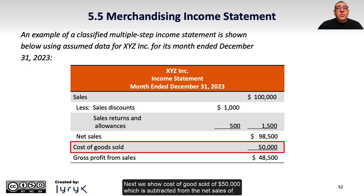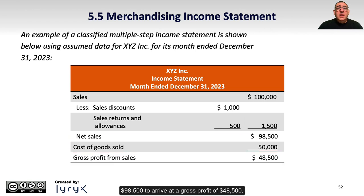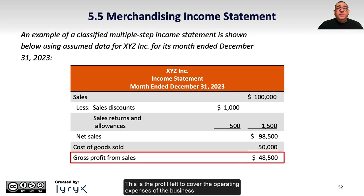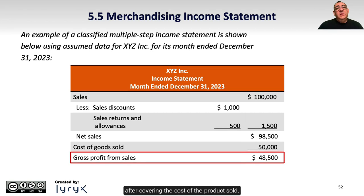Next, we show cost of goods sold of $50,000, which is subtracted from the net sales of $98,500 to arrive at a gross profit of $48,500. This is the profit left to cover the operating expenses of the business after covering the cost of the product sold.